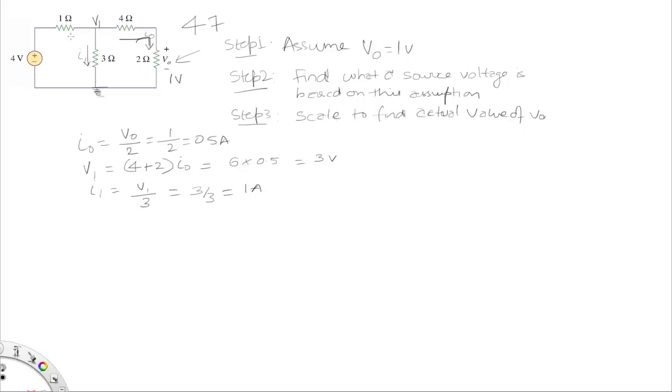Which tells me that the current here, so I is given by I1 plus I naught, which is 1 amp plus 0.5, which is 1.5 amps.